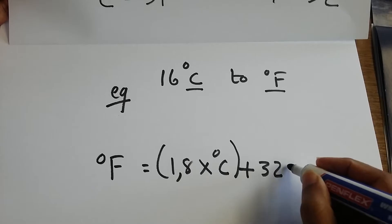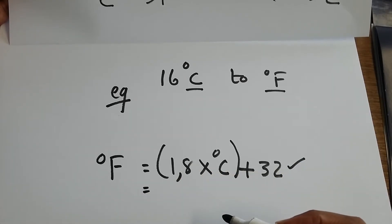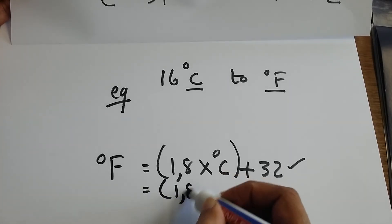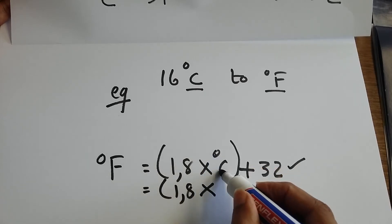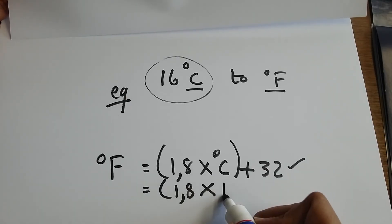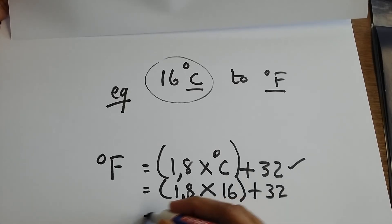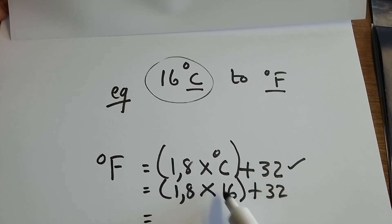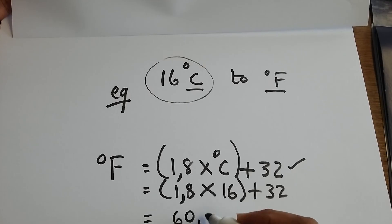Step 1, I write out my equation. Step 2, I'm now going to substitute into my equation. So 1.8, we bring that down, times degrees Celsius. According to my question, it is 16, so I'm substituting 16. Plus 32, we bring it down. I always apply BODMAS — I work with my brackets first. 1.8 times 16 plus 32 is going to give me 60.8 degrees Fahrenheit.